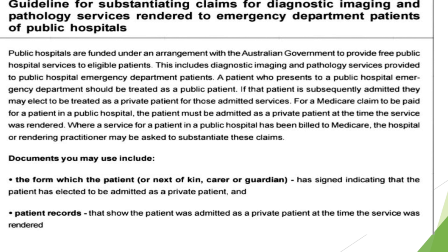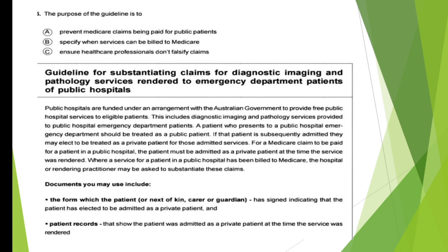At the time, we have to ask the patient. If you are a patient, you will need a guardian. If you admit that you are a patient, the next one is the record, and the next one is the payment. You can select option B and C. Now we have to specify when services can be billed to Medicare.